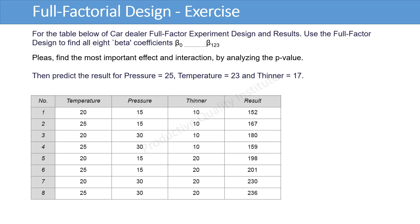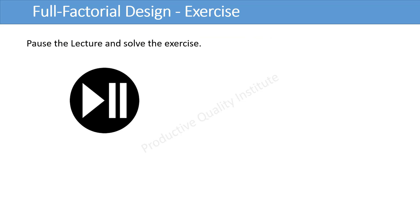For the table below of car dealer fractional-factor experiment design and results, use the fractional-factor design to find 8 beta coefficients beta 0, beta 1, beta 2, beta 12, and so on until beta 123. Please find the most important effect in interaction by analyzing the p-value. Then predict the result for pressure equal to 25, temperature equal to 23 and thinner equal to 17. Please pause the lecture and solve the exercise.